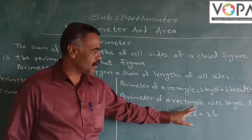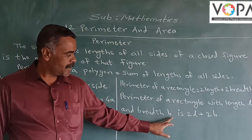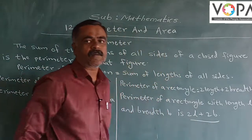Perimeter of a rectangle with length L and breadth B is 2L plus 2B.